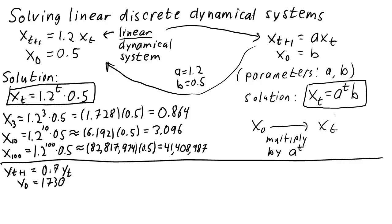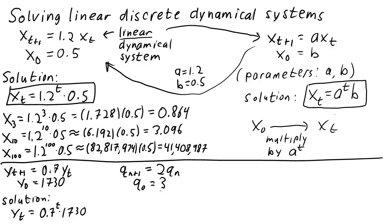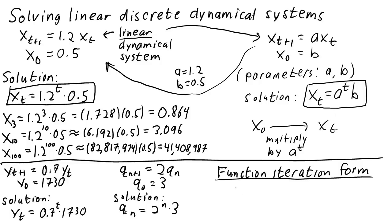We can now easily solve a system like y sub t plus 1 equals 0.7 times y sub t, y0 equals 1730. The solution is y sub t equals 0.7 to the power of t times 1730. The solution to the system q sub n plus 1 equals 2 times q sub n, q0 equals 3, is q sub n equals 2 to the power of n times 3. In all these examples, the dynamical system is given in function iteration form — written so that the value at the next time step was a function of the value at the previous time step: x sub n plus 1 equals f of x sub n, where f was a linear function of the form f of x equals a times x.